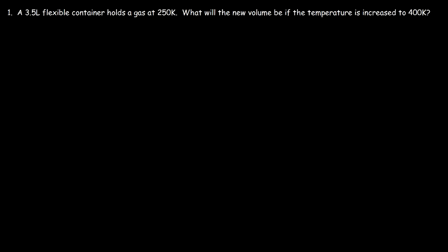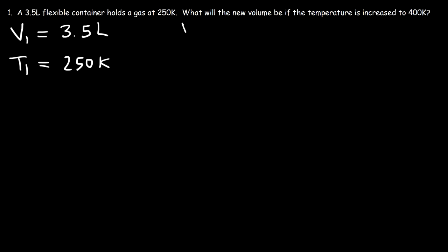Let's put what we've learned into practice. A 3.5-liter flexible container holds a gas at 250 Kelvin. What will the new volume be if the temperature is increased to 400 Kelvin? The original volume V1 is 3.5 liters at a temperature T1 of 250 Kelvin. Our goal is to find V2, and the new temperature T2 is 400 Kelvin.